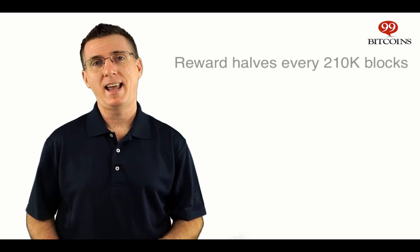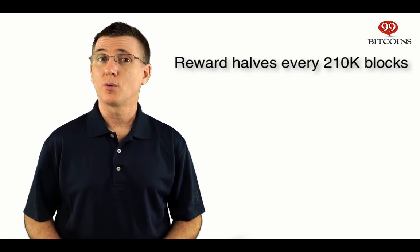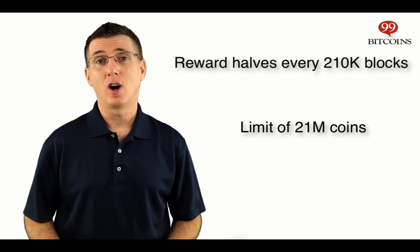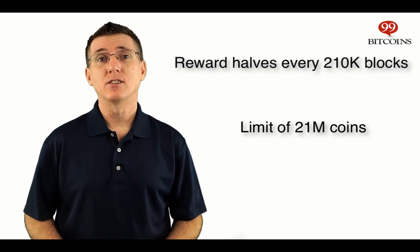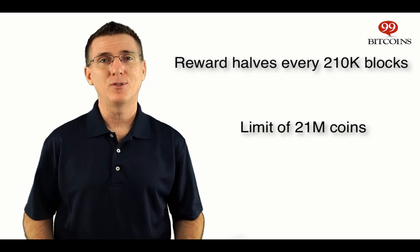The rate and limit of coins created are clearly defined in advance. 50 coins per block of transactions that is added to the blockchain, which takes roughly 10 minutes. This number decreases by half each 210,000 blocks, or roughly 4 years, for a total limit of 21 million coins. This is all very arbitrary. The actual numbers themselves don't matter much, as long as they're agreed upon in advance and level the playing field for everyone.